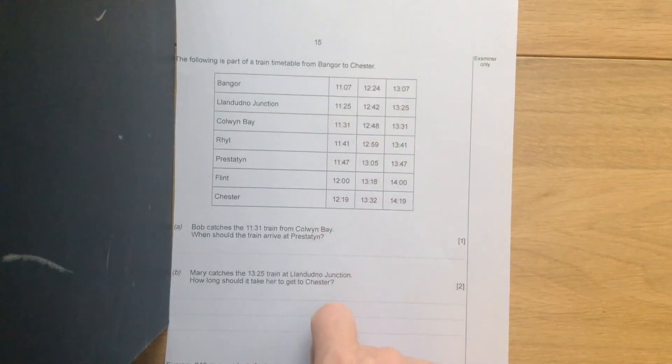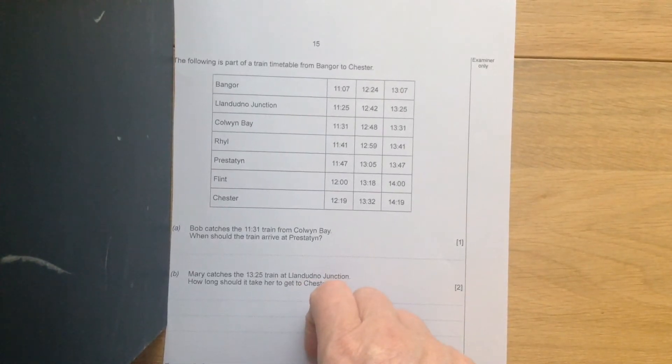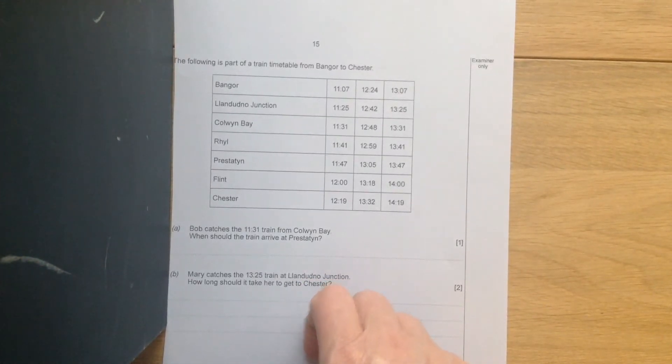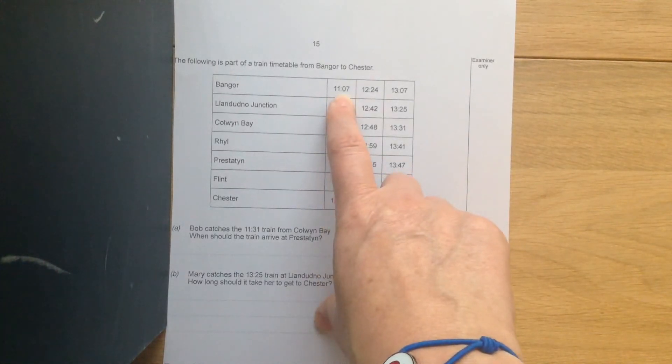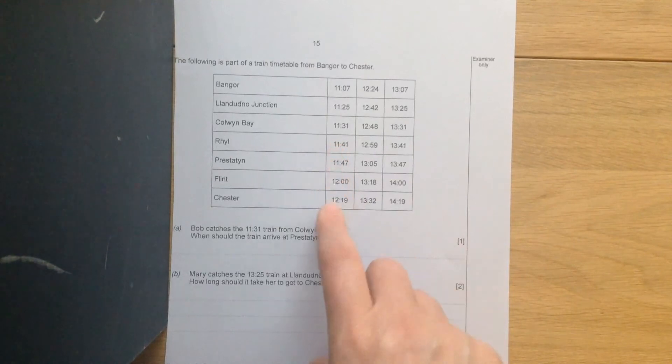The examiner could ask you what time, how long a journey on the 1107 would take from Ril to Chester. So they're telling you it's the 1107, but the journey is from Ril to Chester, so this is the time difference you'd be looking at.